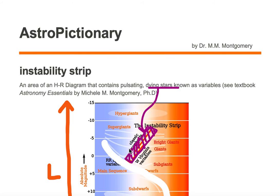This purple area is known as the instability strip - an area of the HR diagram that contains pulsating, dying stars known as variables.